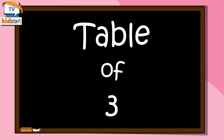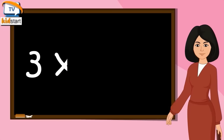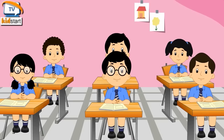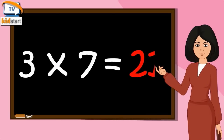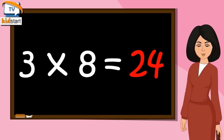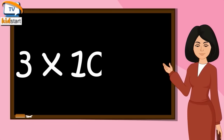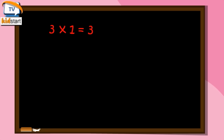Table of Three. Three ones are three. Three twos are six. Three threes are nine. Three fours are twelve. Three fives are fifteen. Three sixes are eighteen. Three sevens are twenty-one. Three eights are twenty-four. Three nines are twenty-seven. Three tens are thirty.